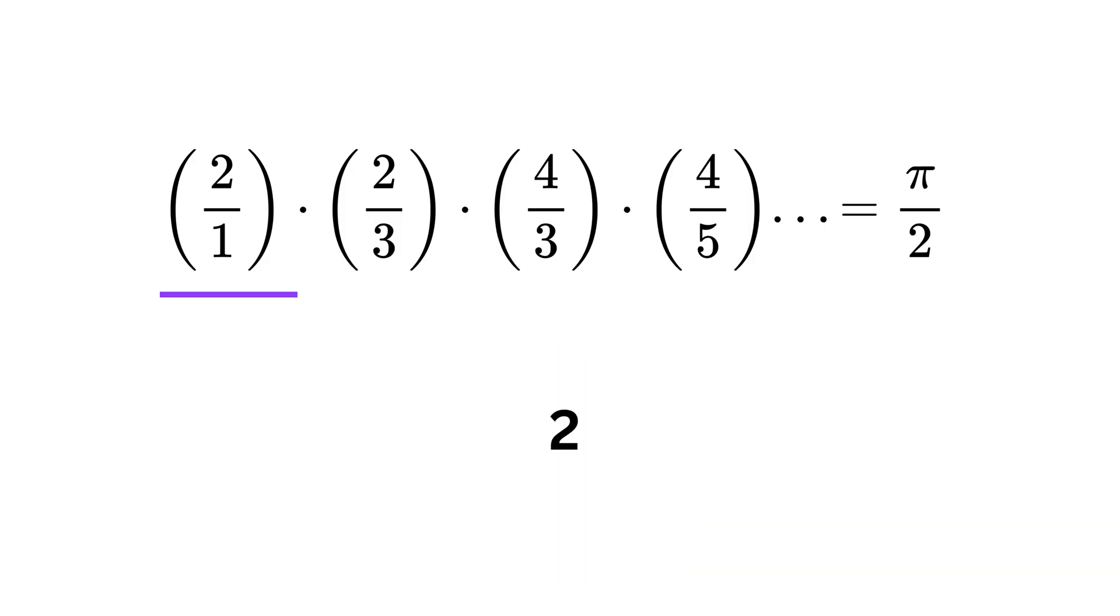Like, take 2 over 1, it is 2. Then multiply it with this next ratio 2 over 3 to get 4 over 3, which is almost 1.33. Now multiply that with the next ratio 4 over 3 to get 16 over 9.